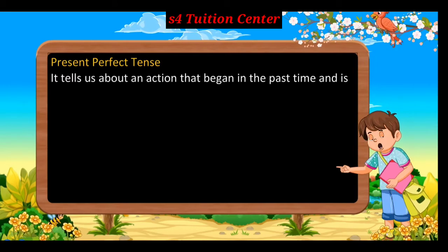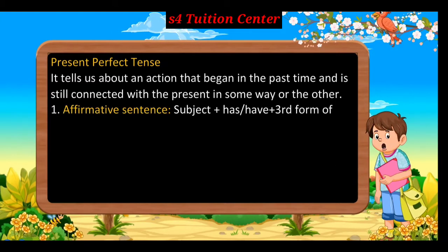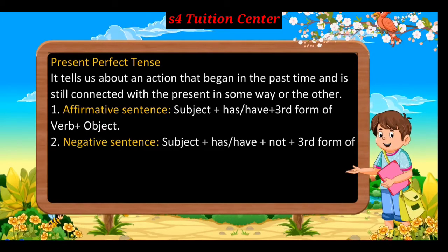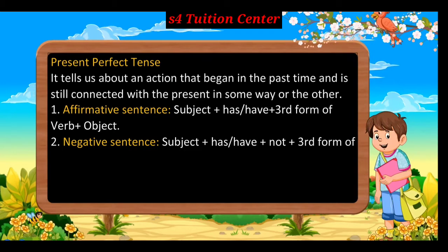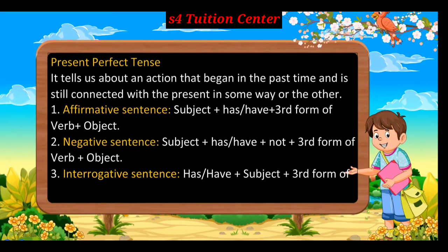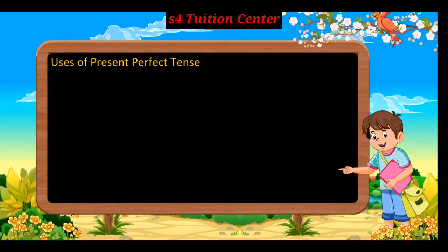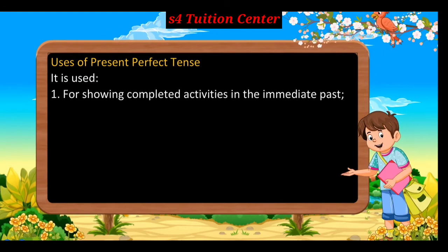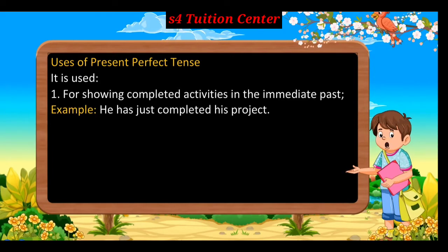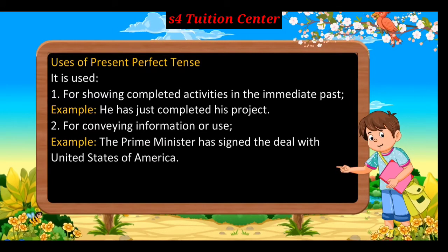Present Perfect Tense: It tells us about an action that began in the past time and is still connected with the present in some way or the other. Uses of Present Perfect Tense — first, for showing completed activities in the immediate past, e.g., he has just completed his project; second, for conveying important information, e.g., the Prime Minister has signed the deal with the United States of America.